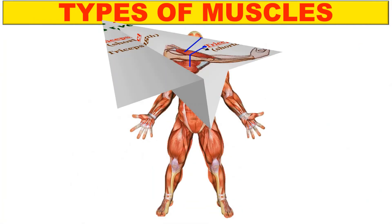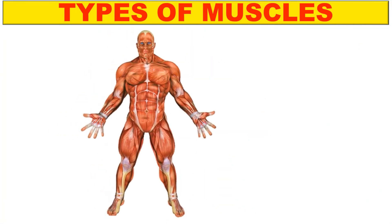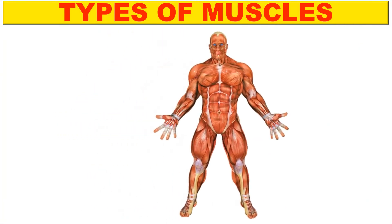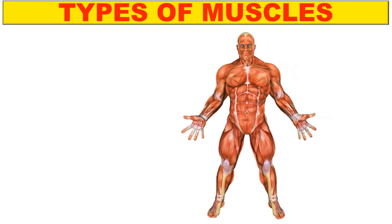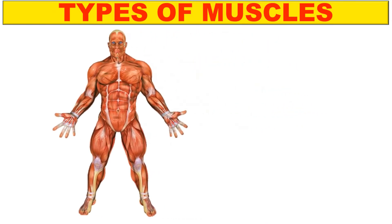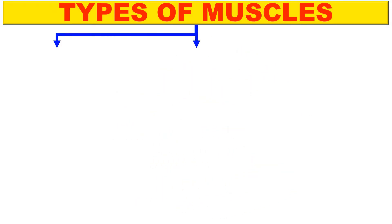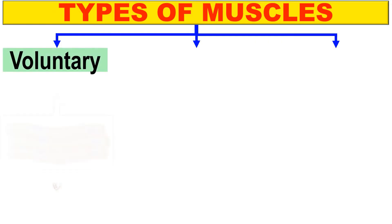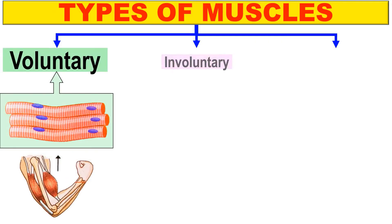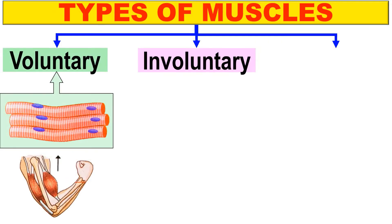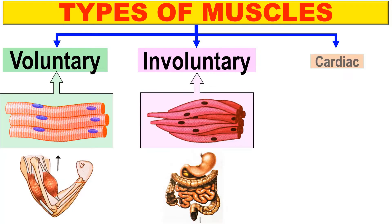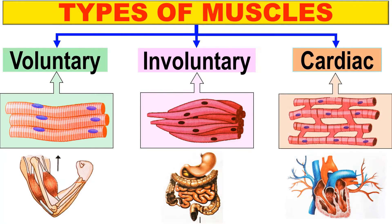Next are the types of muscles. The muscular system is made up of different muscles. Based on their structure and functions, muscles can be classified into three types: voluntary or striated muscles, involuntary or smooth muscles, and cardiac muscles.